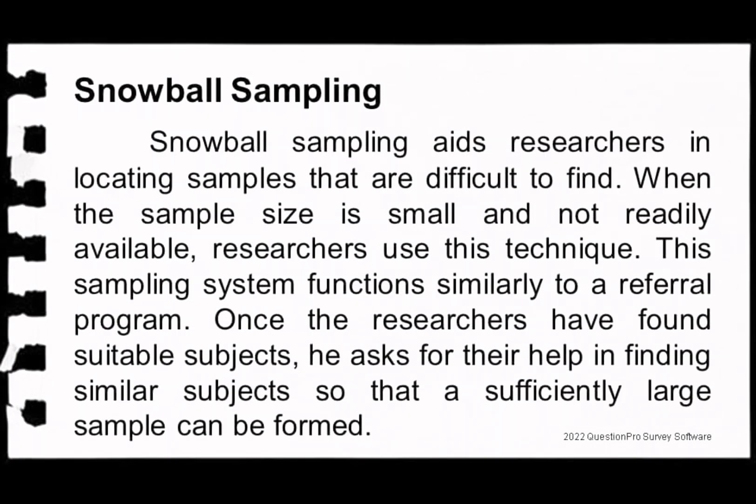Snowball sampling aids researchers in locating samples that are difficult to find. When the sample size is small and not readily available, researchers use this technique. It functions similarly to a referral program — once researchers have found suitable subjects, they ask for further help in finding similar subjects so that a sufficiently large sample can be formed.